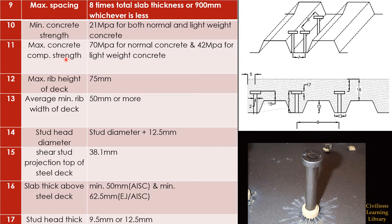The minimum concrete strength is 20 MPa for both normal and lightweight concrete. The maximum concrete compressive strength is 70 MPa for normal concrete and 42 MPa for lightweight concrete. The maximum rib height is 75 mm and must not exceed this value. The minimum rib width of the deck seat should be 50 mm on average.